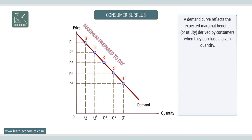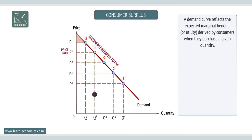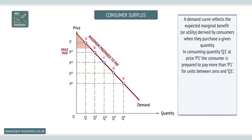In consuming quantity Q1 at price P1, the consumer is prepared to pay more than P1 for units between 0 and Q1.